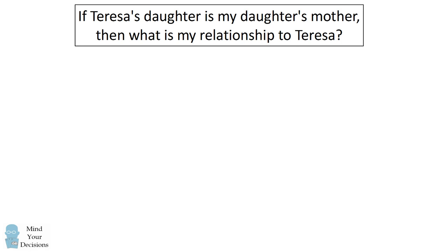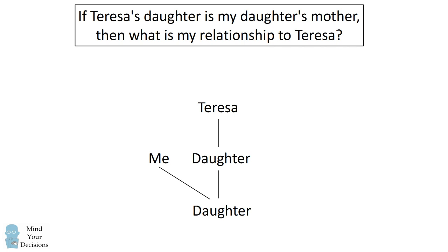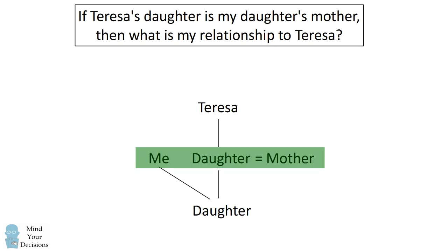I like to think about this problem in terms of the family tree. Teresa has a daughter, and I have a daughter, and that daughter of Teresa is the mother of that daughter. So I need to figure out my relationship to Teresa, and it's going to be at the same level as the daughter, or one level below Teresa. So 'I am Teresa' cannot be the answer because that's at the same level as Teresa.